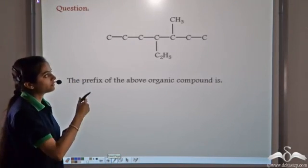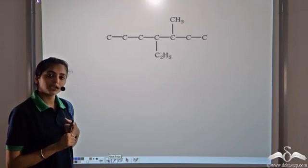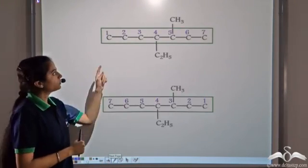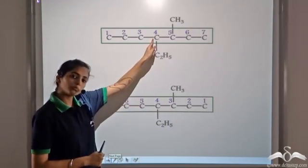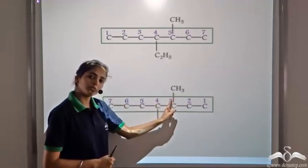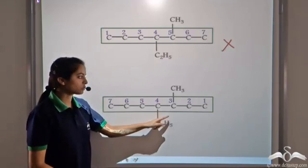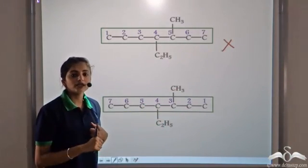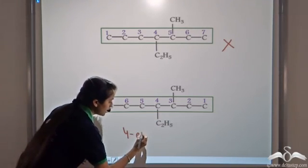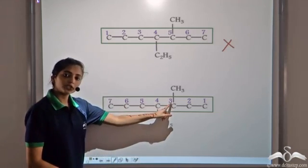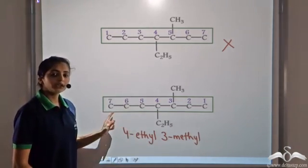Let's take a practice question. We have an organic compound — what is its prefix? First, find the longest carbon chain. Starting from the left, the first substituent is encountered at the fourth position; from the right, at the third position. So by the rule, we start from the right to give the lowest number. We have methyl and ethyl, so we arrange alphabetically: ethyl is at the fourth position and methyl is at the third position. The prefix is 4-ethyl-3-methyl.